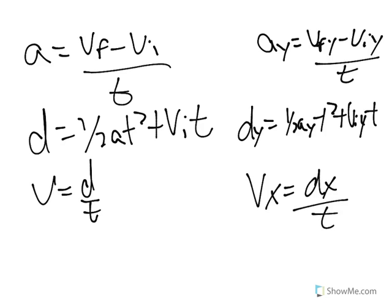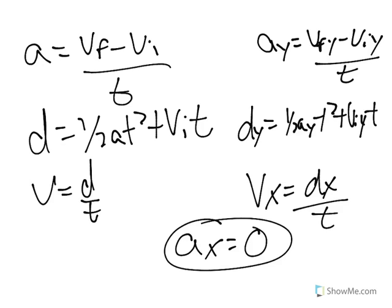Now the reason VX = DX/T is because there is no acceleration in the X when we talk about projectile motion. So none of these formulas apply to the X stuff because there is no acceleration. This is the only formula you have to worry about whenever you are trying to do stuff in the X. This stuff we will have to worry about if we are doing things in the Y.